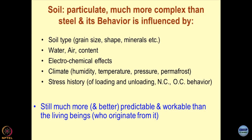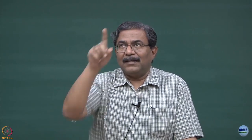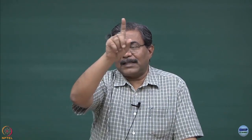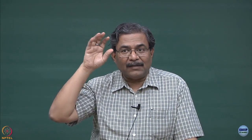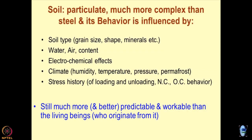Stress history — memory effect. Soil understands what the OCR is, what NC material is, and what the pre-consolidation pressure is. Below pre-consolidation pressure it is OC material; above it is NC material. You keep on repeating loading and unloading — the NC behaviour becomes almost a continuous curve. The perturbations form a hysteresis loop that goes into the memory of the system. Still, predicting soil response is easier than predicting human beings' response — human beings are much more complicated.